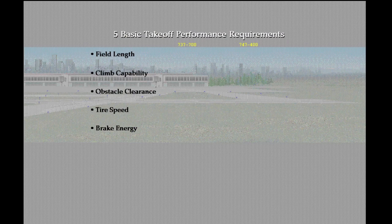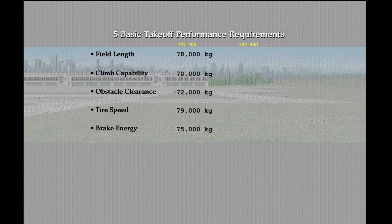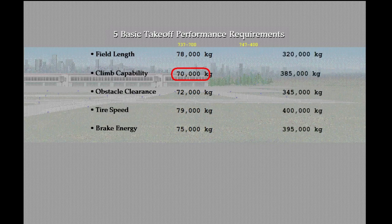Consider the following example where each of these five requirements has an associated maximum takeoff weight. In this specific 737-700 example, the climb limit weight is the most restrictive; therefore the actual takeoff weight of the airplane cannot be greater than this limiting weight. However, in the 747-400 example, the field limit weight is the most restrictive, and again the actual takeoff weight cannot be greater than this limiting weight.